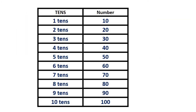Let's learn in this table. 1 tens makes 10. 2 tens means 20. 3 tens means 30. 4 tens is 40. 5 tens is 50. 6 tens is 60. 7 tens is 70. 8 tens is 80. 9 tens is 90. And 10 tens makes 100.